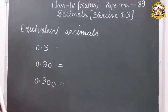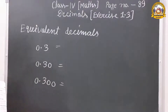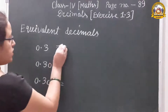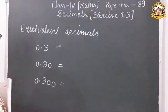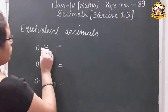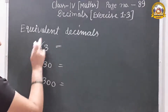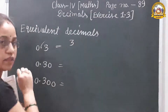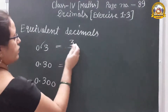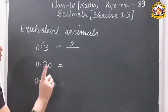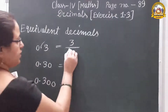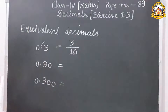Suppose we have the decimal number 0.3, then 0.30, and third time 0.300. We want to convert all these decimal numbers into fractions. We remove the decimal point and write the number. How many zeros do we put in the denominator? One zero, because after the decimal there is only one digit. So the fraction is 3 upon 10.